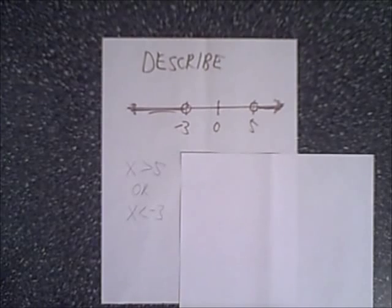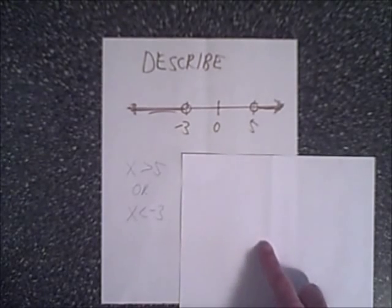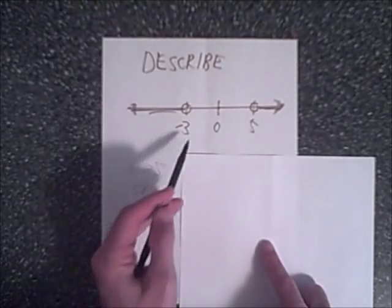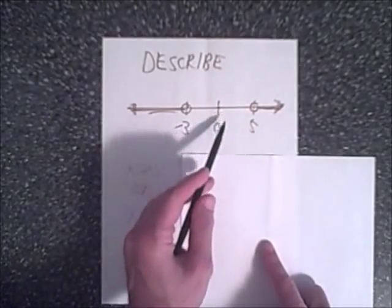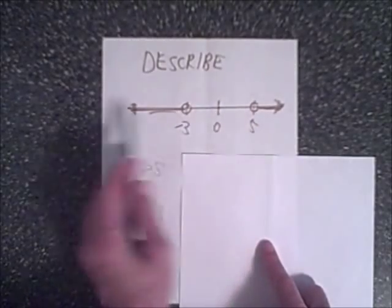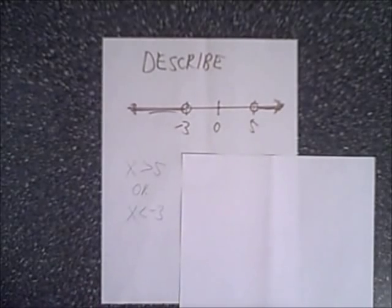But how would we express this as an absolute value inequality? Well, as I mentioned before, a lot of absolute values, it's related to distance. So what we have here is we have a distance. We're trying to find what value of x in the middle would be the distance to each of these endpoints and going outward.